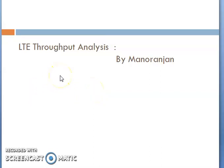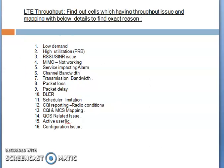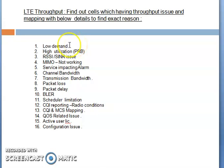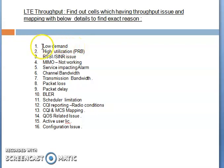So let's start with the reasons for low throughput. First, when you are starting analysis, find out the cells which are having throughput issues where you are getting low throughput, and map with the below details to find the exact reasons. The first reason is low demand — low demand means you can map with your payload. If the payload is less, that means the demand is low, and that's why throughput is getting less on that particular cell or site.